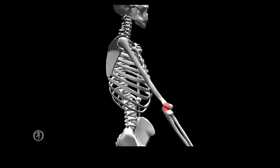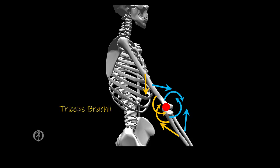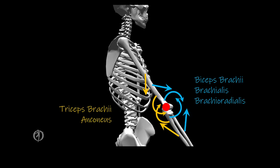Now let's take a look at the elbow. For the elbow, we have a medial-lateral axis that goes through the humeral epicondyles. Any MTC that has a force vector that is posterior to this axis of rotation will create a torque that will extend the elbow, while any MTC that has a force vector that is anterior to this axis of rotation will create a torque that will flex the elbow. MTCs that will extend the elbow include the triceps brachii and the anconeus, while those that will flex the elbow include the biceps brachii, the brachialis, and the brachioradialis.